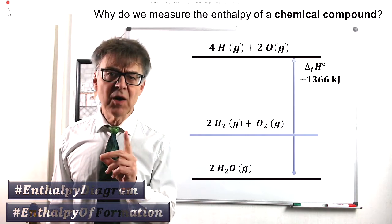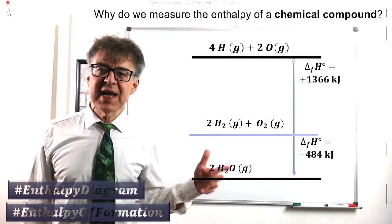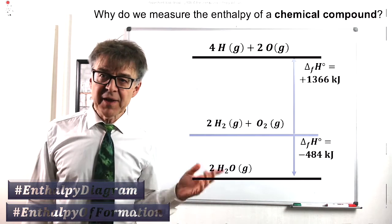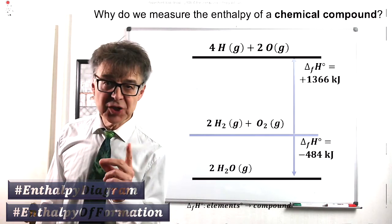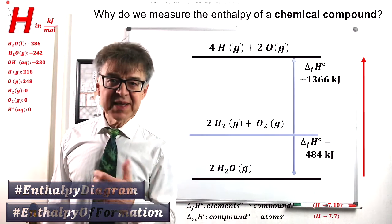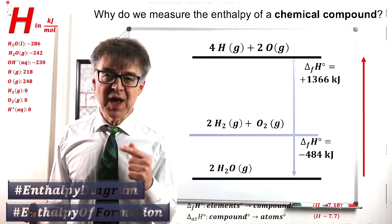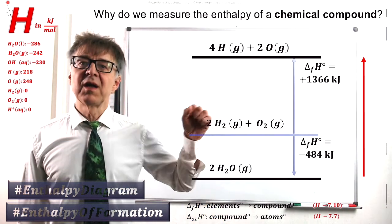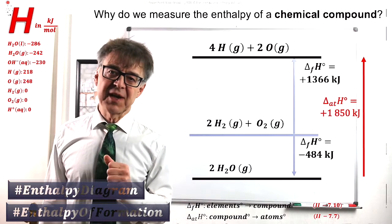The blue arrows are so-called enthalpies of formation. The blue arrow down is the enthalpy of formation of water. The arrow up symbolizes the enthalpy of formation of the atoms. According to Hess's law, we can handle these arrows like we can add or subtract vectors. The red arrow here is the atomization enthalpy of water, the heat that we need to completely split water molecules into atoms. This heat corresponds to 1850 kJ.